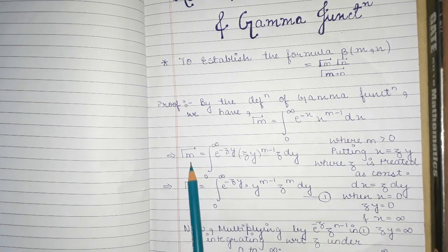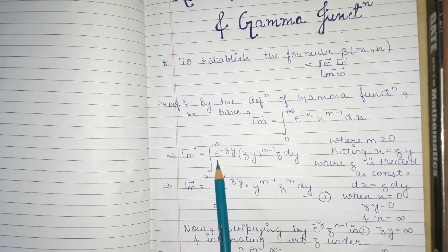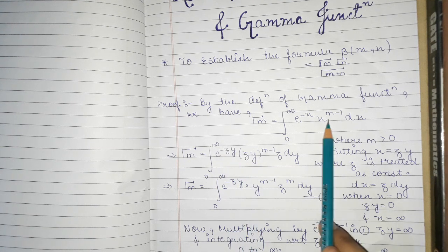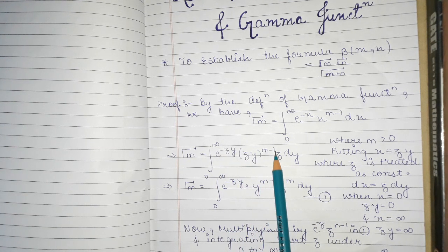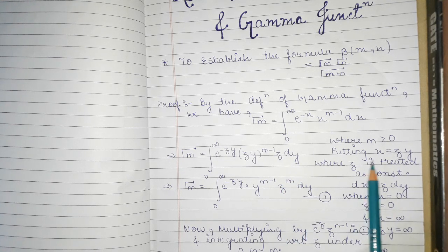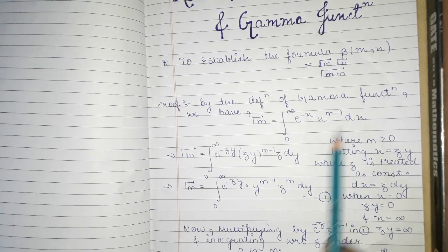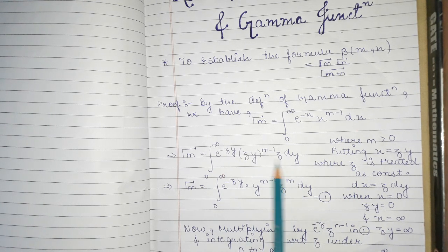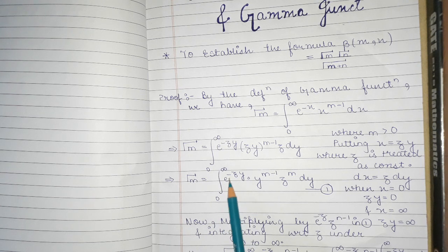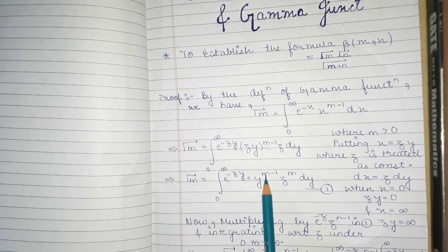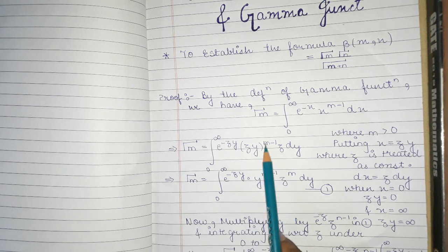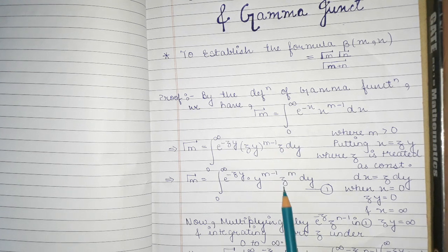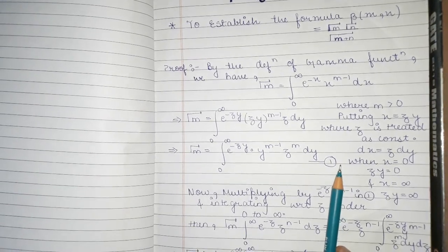So this expression becomes: Gamma(m) = integral from 0 to infinity of e^(-zy) times (zy)^(m-1) times z dy. Simplifying, this equals the integral from 0 to infinity of e^(-zy) times y^(m-1) times z^(m) dy. We label this as equation 1.